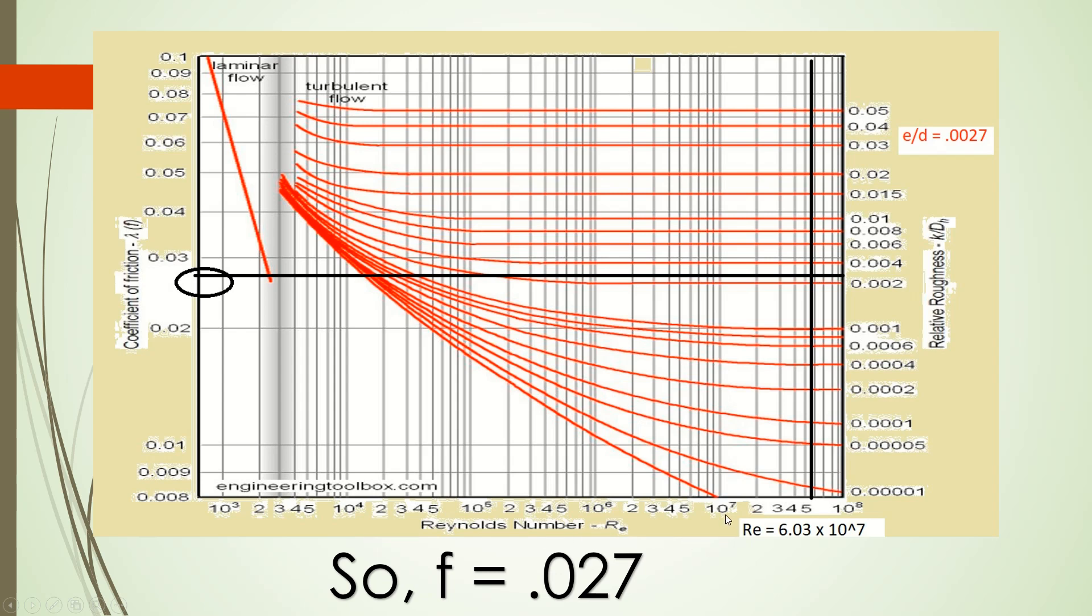Now, for Reynolds number: 10^7 and 10^8, our value lies between these two. But we have 6.03, so approximately here you get 6.03. So I draw a vertical line here.